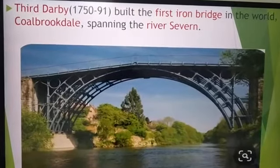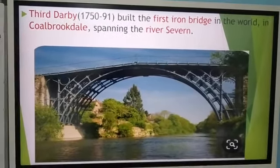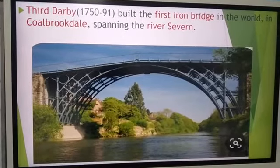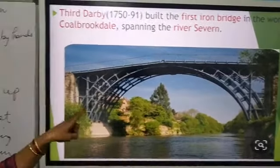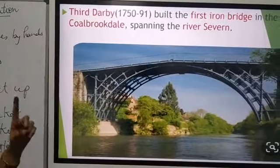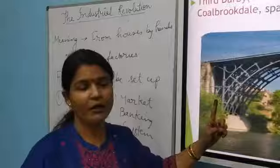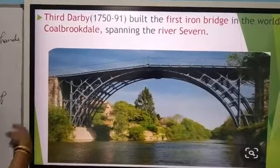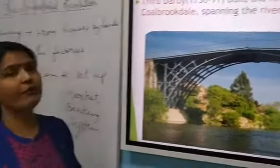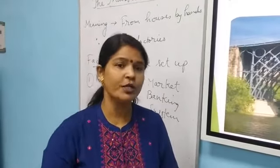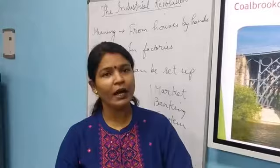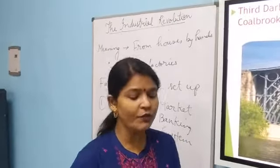The third Derby built the first iron bridge in the world — over the Severn River in Coalbrookdale. This bridge still stands today. Many more bridges were built after that, but this was the first bridge made of iron.